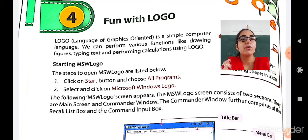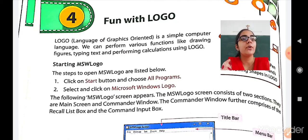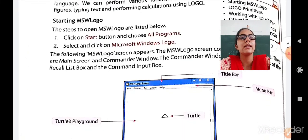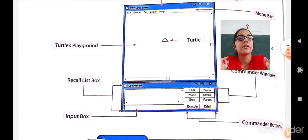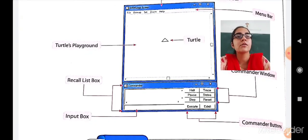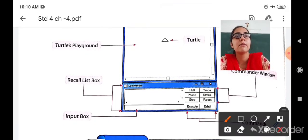The MSW Logo screen will appear. The MSW Logo screen consists of two sections: first is the main screen where you can draw anything, and second is the commander window where you give commands. The commander window further comprises the recall list box and the command input box. So here you can see the interface of MSW Logo.